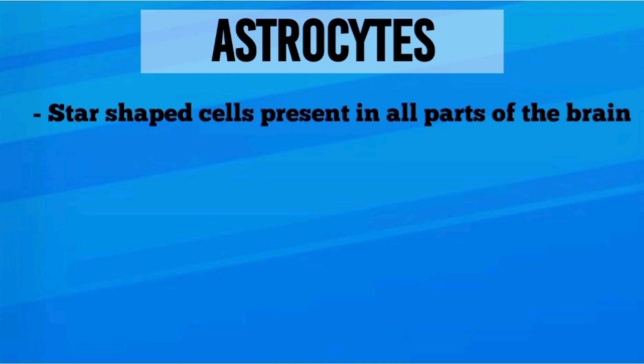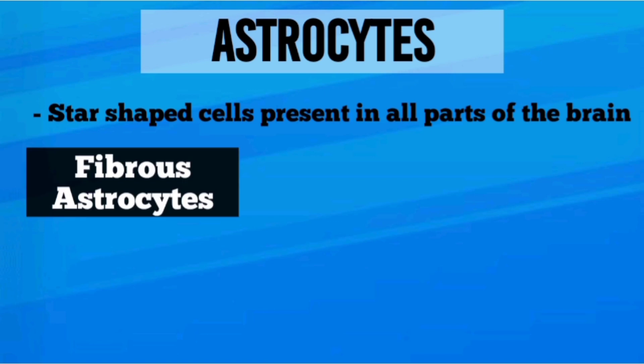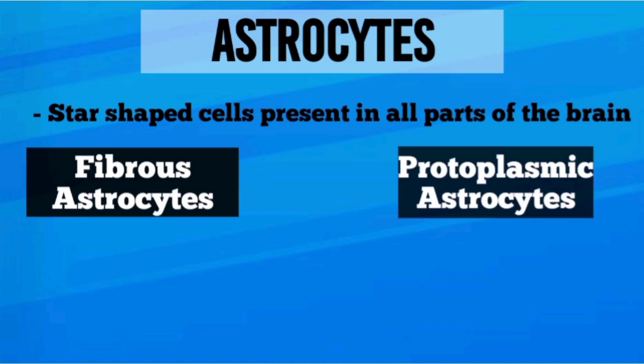Astrocytes are the star-shaped cells present in all parts of the brain. Two types of astrocytes are found in the human brain: the fibrous astrocytes and the protoplasmic astrocytes.